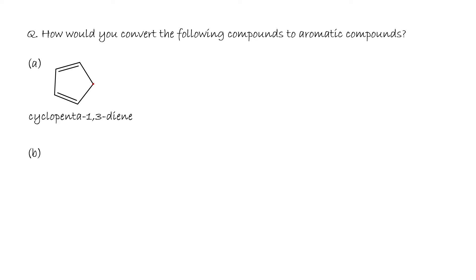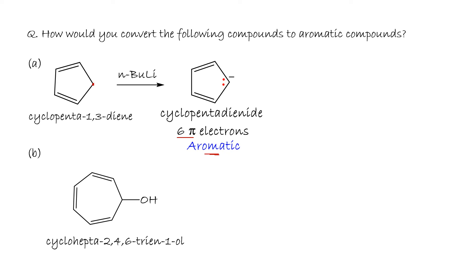We have here a carbon that's sp³. It has to be sp² with a pure p orbital containing two electrons. To do that, we react the compound with n-butyllithium, a very strong base, to form cyclopentadienide anion with six pi electrons. This anion is aromatic.